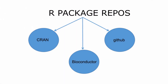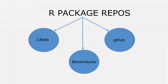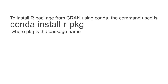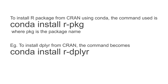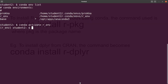Now, R packages can be found in the CRAN repository or they can be found in the Bioconductor repository. These are the two main repositories. Of course, we also have some on GitHub, but I will look at all those available approaches. So if you have your R package in the CRAN repository and you want to install and use it in Conda, this is how you do it. Let's take for example dplyr — we say conda install r-dplyr.